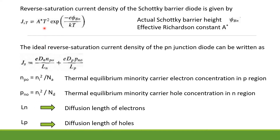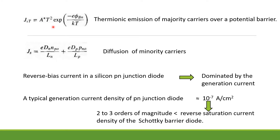We can see that the equation for JST of the Schottky barrier diode and that of the P-N junction diode are totally different. According to the Schottky equation, current is determined by the thermionic emission of majority carriers over a potential barrier. According to the P-N junction equation, current is determined by the diffusion of minority carriers.